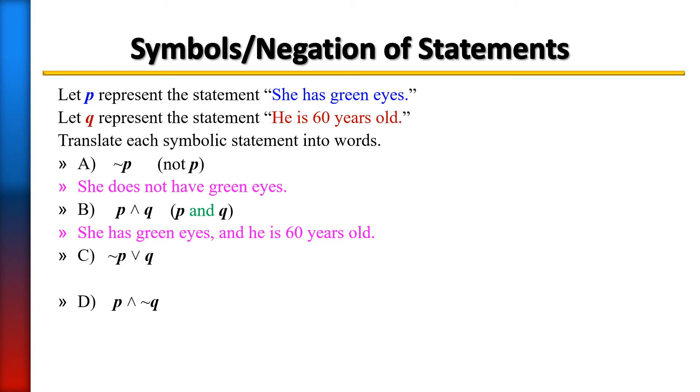The next example is NOT P, then you have the OR symbol, and then Q. So NOT P or Q. We need to negate P, so that means 'She does not have green eyes, or he is 60 years old.' That is how you would write it.